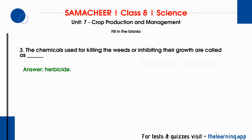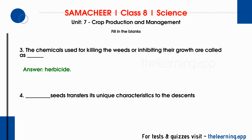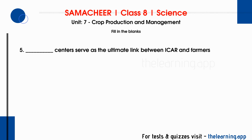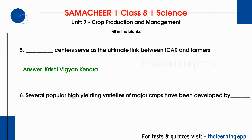Fourth question: seeds that transfer unique characteristics to descendants are called heirloom seeds. Fifth question: the institution that served as the ultimate link between ICAR and farmers — correct answer is Krishi Vigyan Kendra. Sixth question: several popular high-yielding varieties of major crops have been developed by IARI.